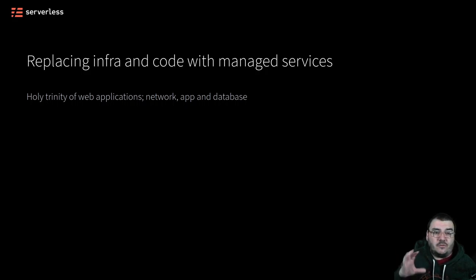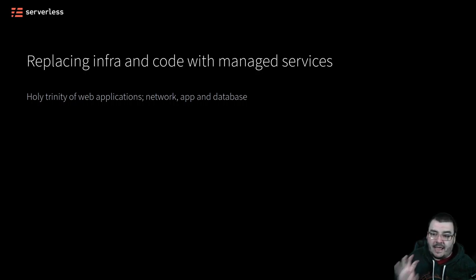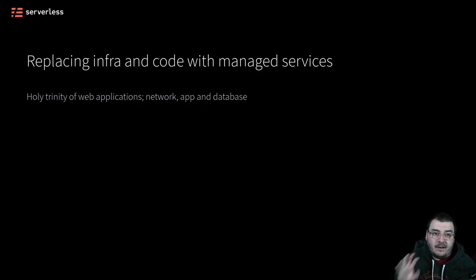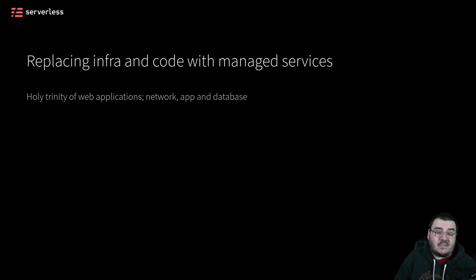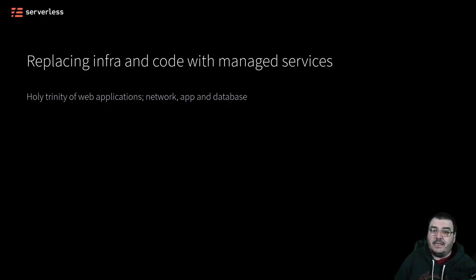So let's consider the holy trinity of web applications — those three main aspects of a web app that we need in order to have our applications running and available to users. And that is network, where we can accept HTTP requests, the app itself that can process these network requests, and a data store of some kind that can store the data we need.